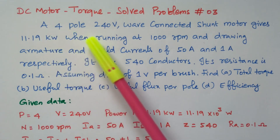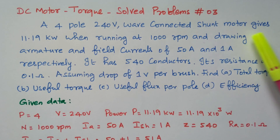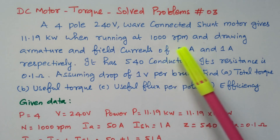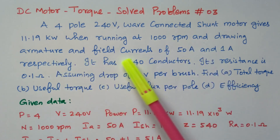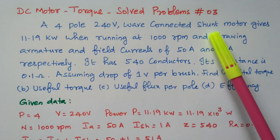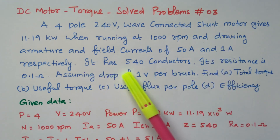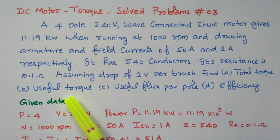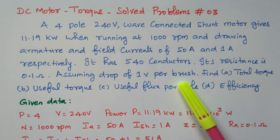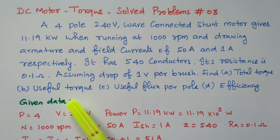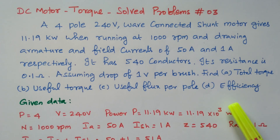A 4-pole, 240 volt, wave-connected shunt motor gives 11.19 kilowatt when running at 1000 RPM and drawing armature and field current of 50 ampere and 1 ampere respectively. It has 540 conductors, armature resistance of 0.1 ohm, and assume a drop of 1 volt per brush. We need to find: total torque, useful torque, useful flux per pole, and efficiency.